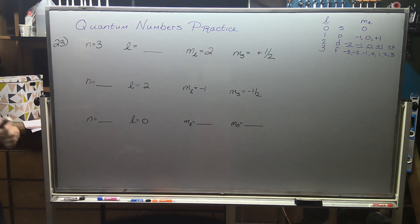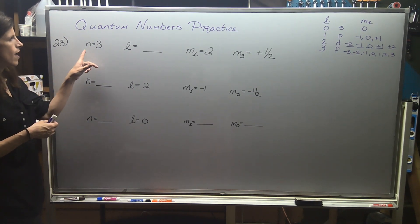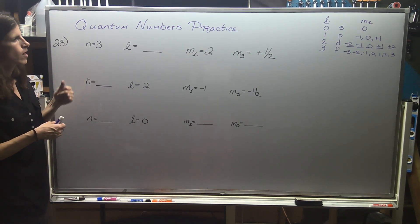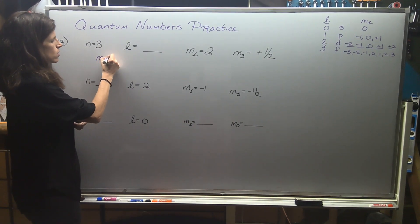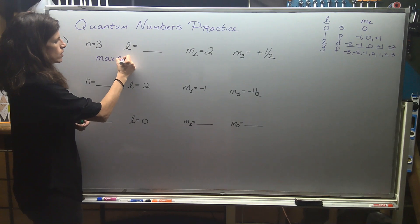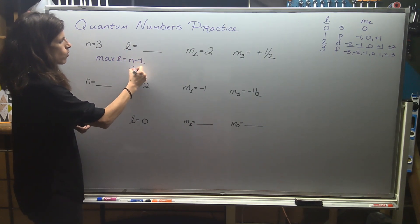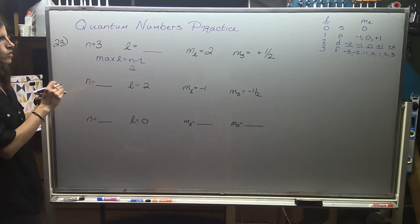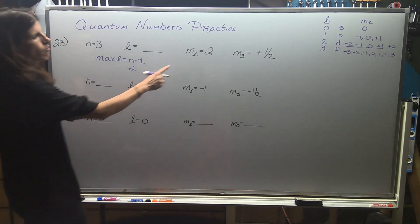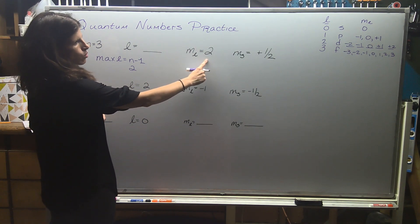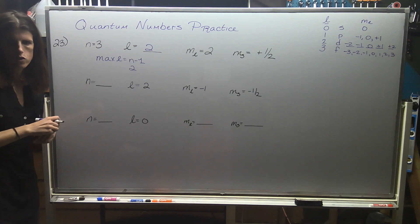Here we're dealing with n equals 3, the third row of the periodic table. Using max l equals n minus 1, we can go up to l = 2 — we can have 0, 1, or 2; s, p, or d. Since ml equals 2 is already given, I want to use l equals 2 so I don't cause more issues.